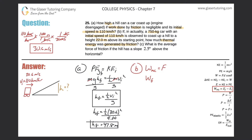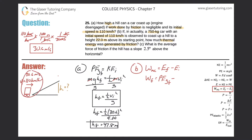At the final location the height is 22 meters and the car is no longer moving, so there's no kinetic energy — it's all potential energy. At the initial location the car has no height relative to the ground, so all the energy is kinetic. Therefore, the work due to friction equals mgh_final minus one-half m·v_i².